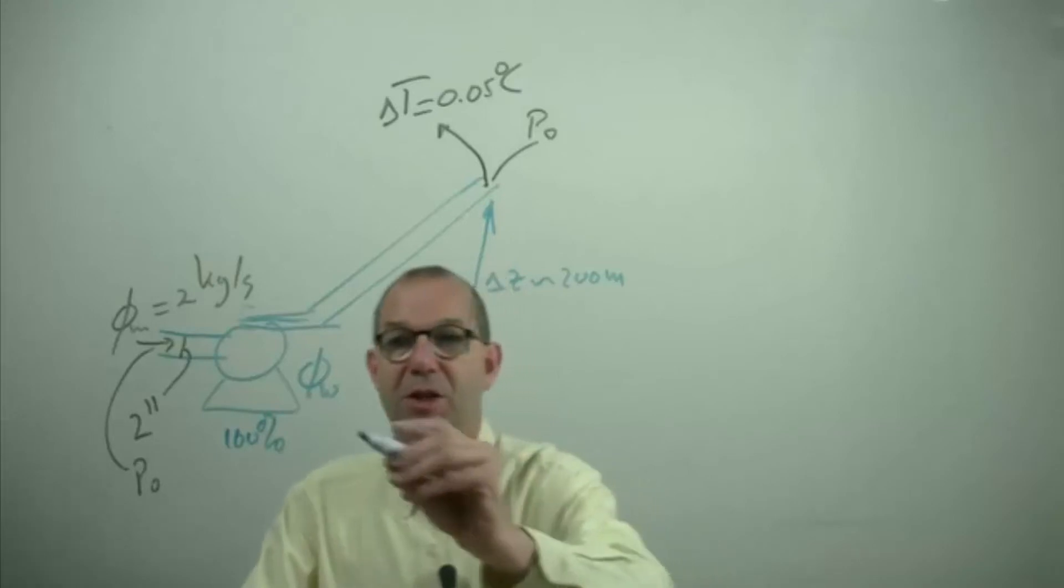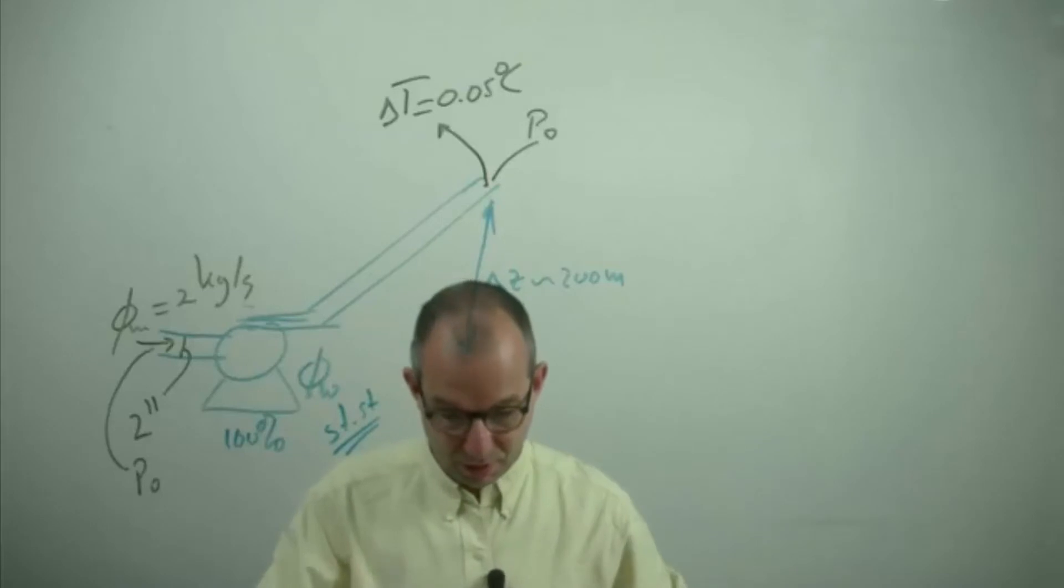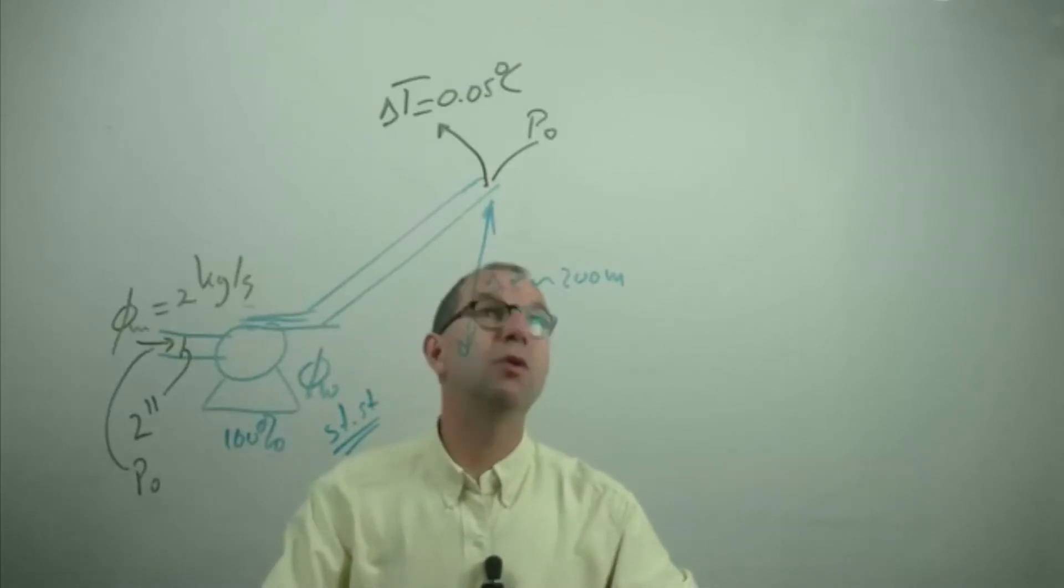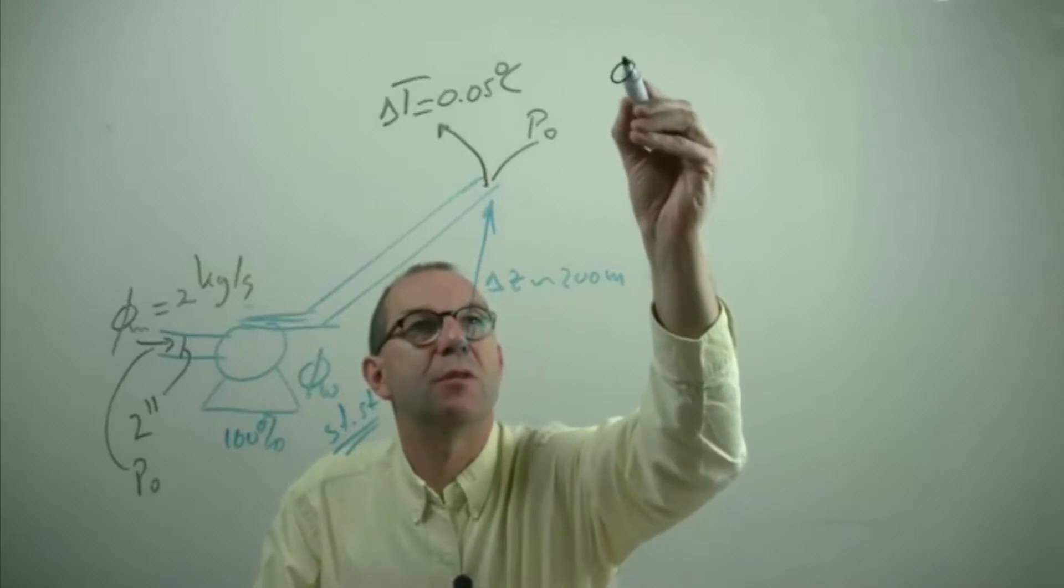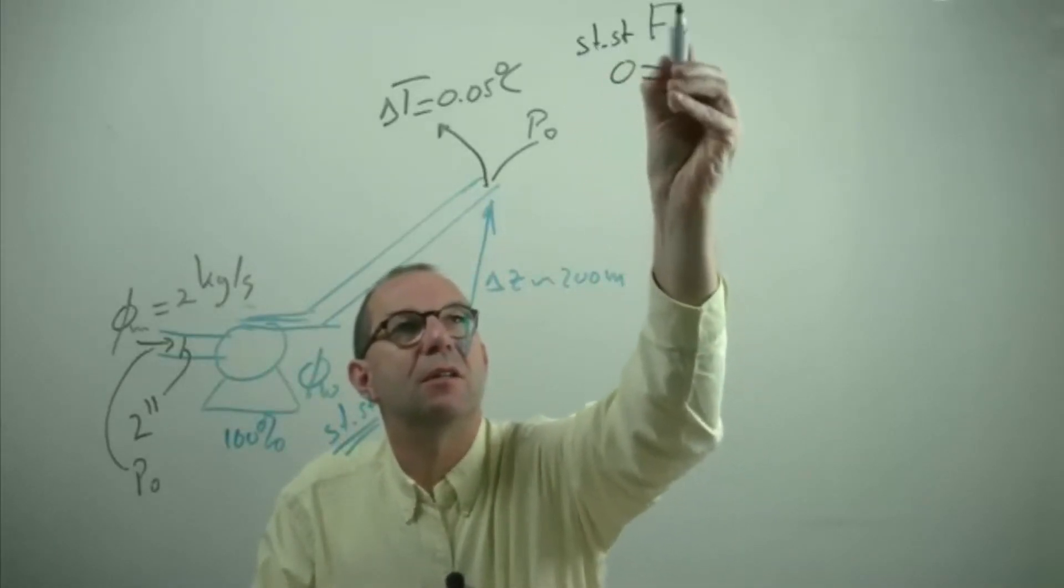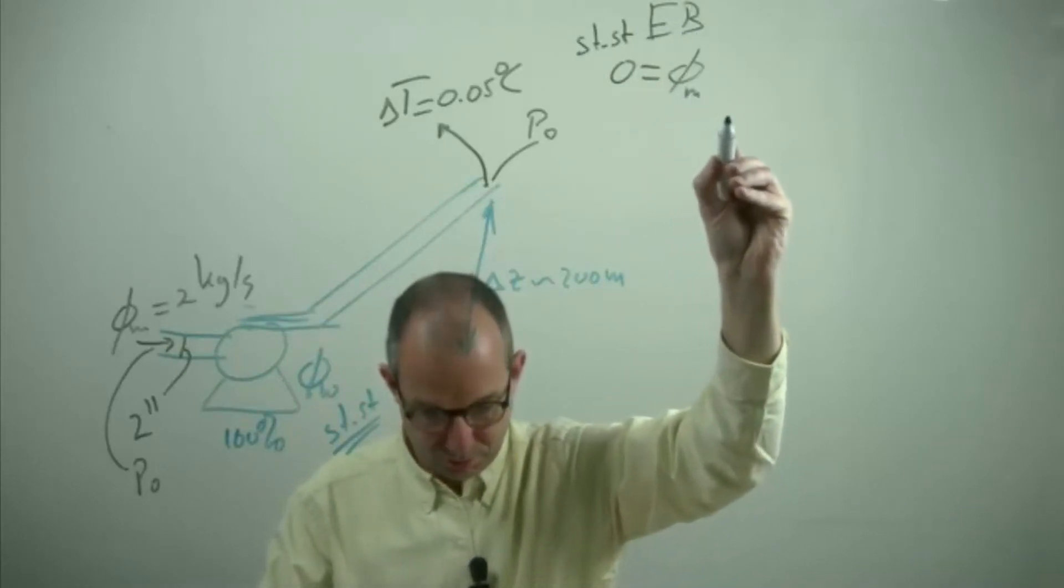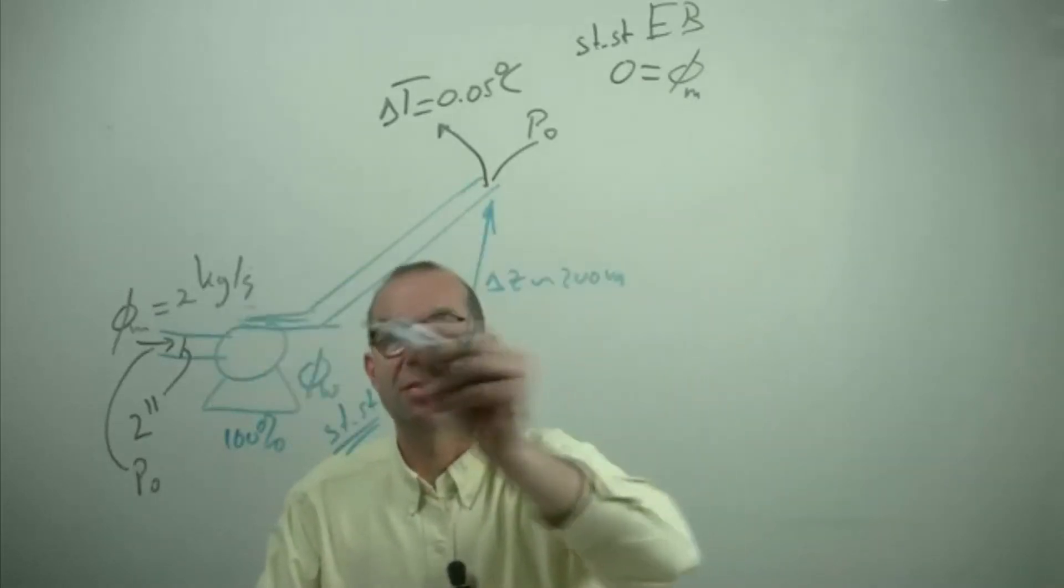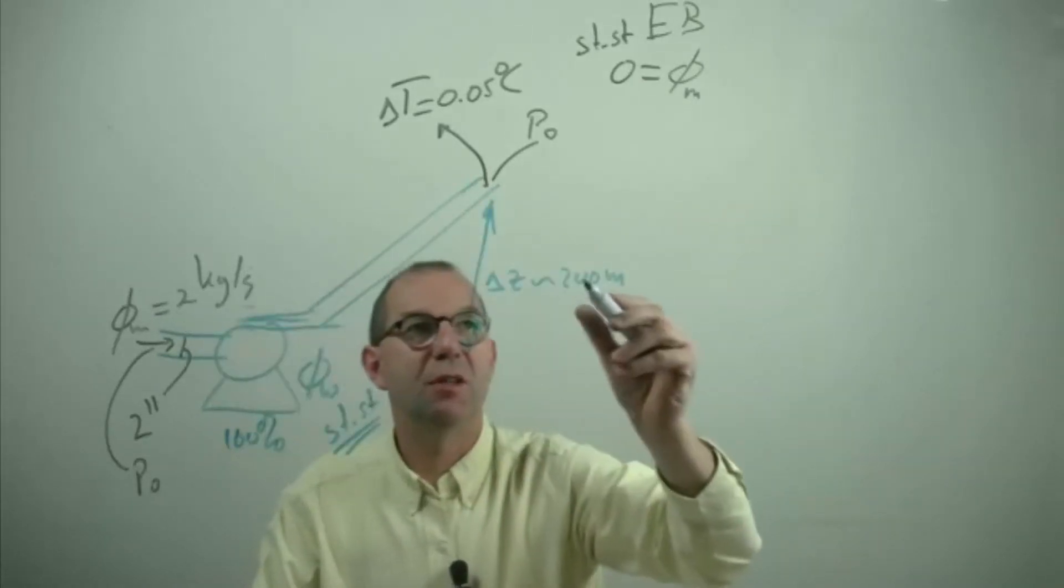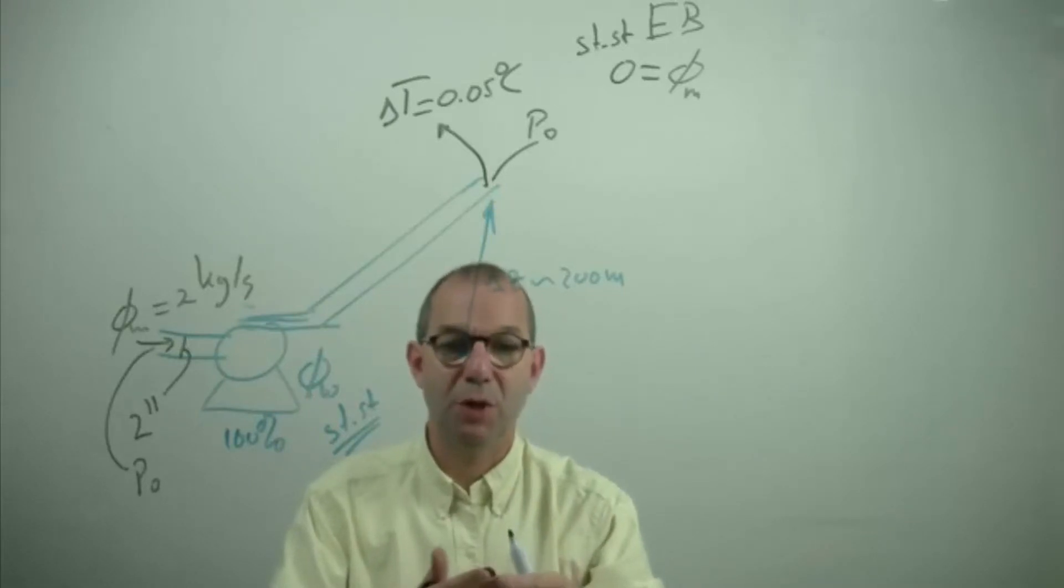We can find that by a steady state energy balance for the system. So we have 0 equals, because it is steady state energy balance. What flows in is the mass flow rate times the energy concentration, that is internal energy, so temperature effects, Cp times the entrance temperature, kinetic, potential and pressure.